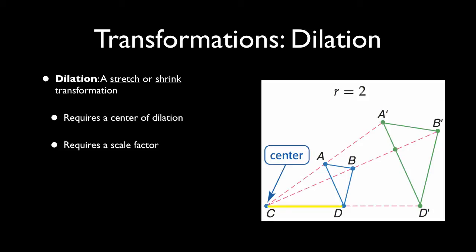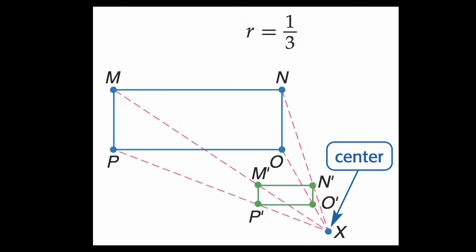So here I have CD as shown. In order to stretch with that scale factor, R equals 2, we're just going to double up CD to get CD prime. It's possible to also have a dilation in the other direction, right? Have a scale factor less than 1. That would be a shrink dilation.